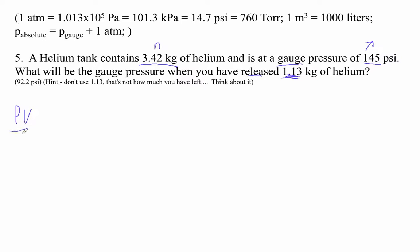So PV over NT is equal to PV over NT. Now, I'm assuming the temperature stays constant because they don't even talk about it. I'm assuming that the volume stays constant. So this is pressure over N is pressure over N, right?